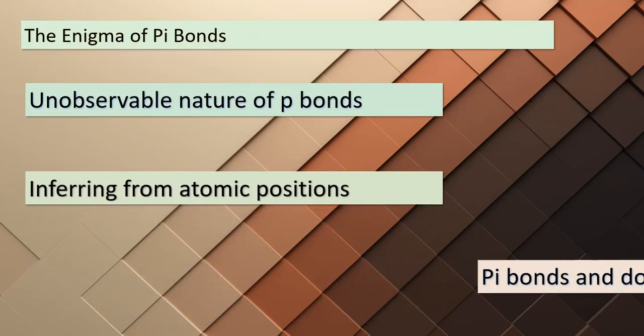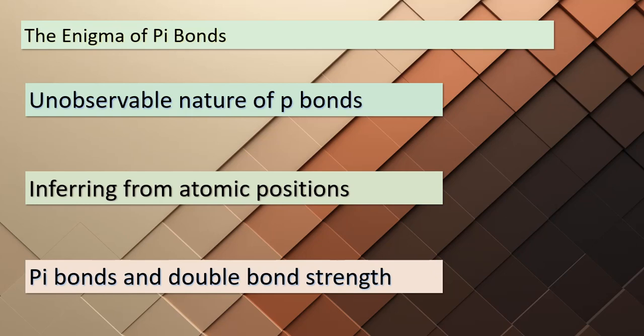We're on our journey to understand pi bonds better. If we can't directly observe pi bonds, how do we know they're there? It's all about inference — we rely on the positions of atoms in a molecule to draw conclusions about the presence of pi bonds. Take ethene, for example: its unique characteristics provide compelling evidence for pi bonds. The C–C bond in ethene is shorter than single bonds, indicating a stronger bond due to the presence of a pi bond. For those p orbitals to efficiently overlap and form a pi bond, the atoms they belong to need to lie in the same plane. This planar alignment is a key factor in pi bond formation.